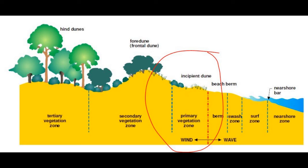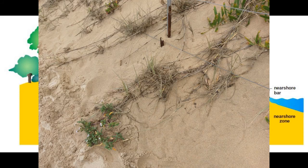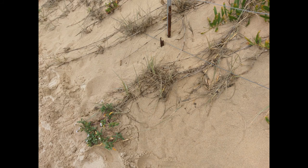The species we find on the incipient dune are often things like grasses — marram, spinifex grass, beach fescue, that sort of thing. They play a really important role because they're the first line of defence for the coastal dune system. Coastal dunes provide a lot of protection for the land behind them because they act as a store of sand that can be taken away if there's a large storm surge with destructive wave capabilities. So if a destructive wave comes along, it's this primary vegetation zone that's going to be affected the most.